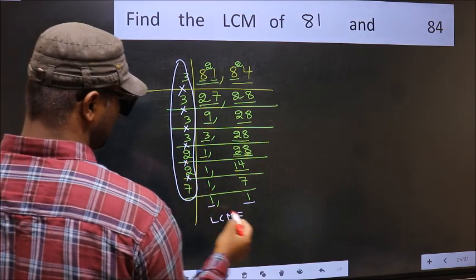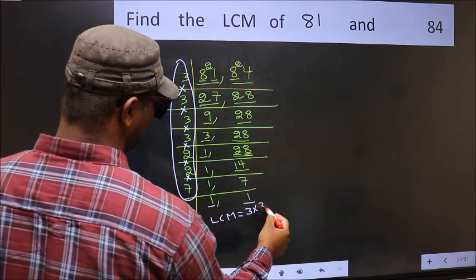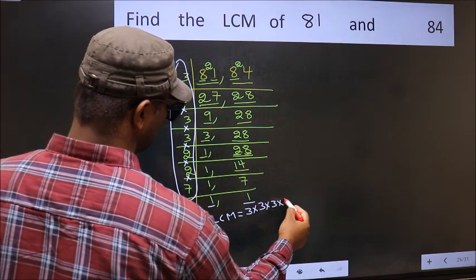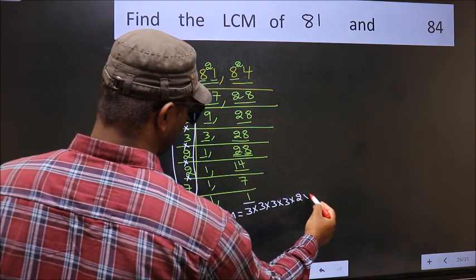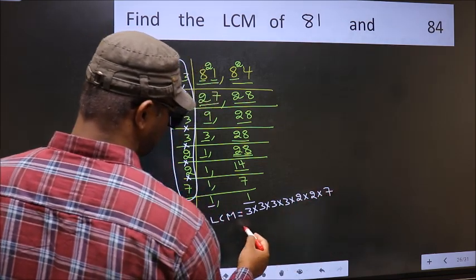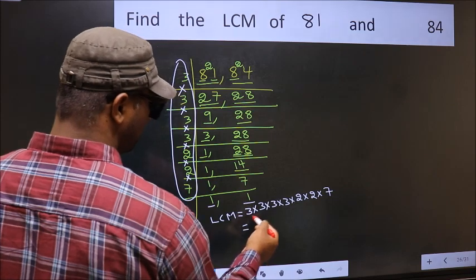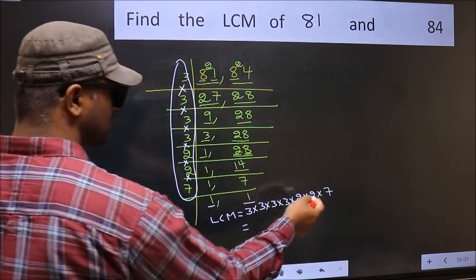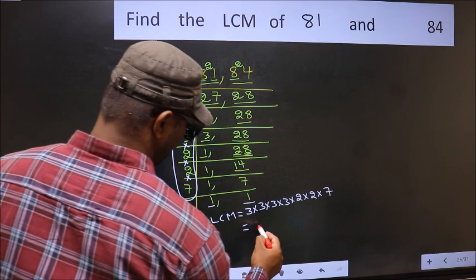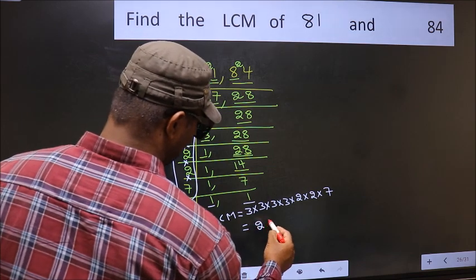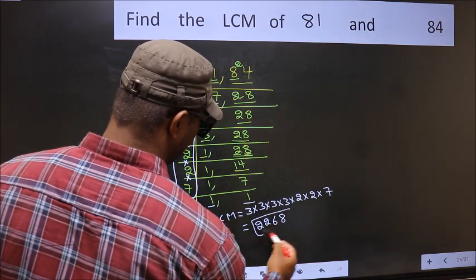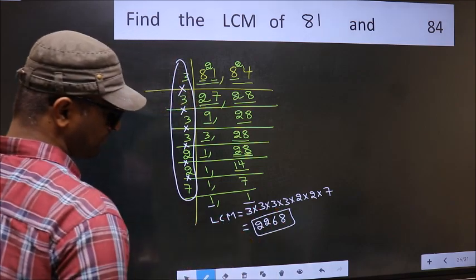The LCM is the product: 3 × 3 × 3 × 3 × 3 × 2 × 2 × 7. When we multiply these numbers, we get 2268 as our LCM.